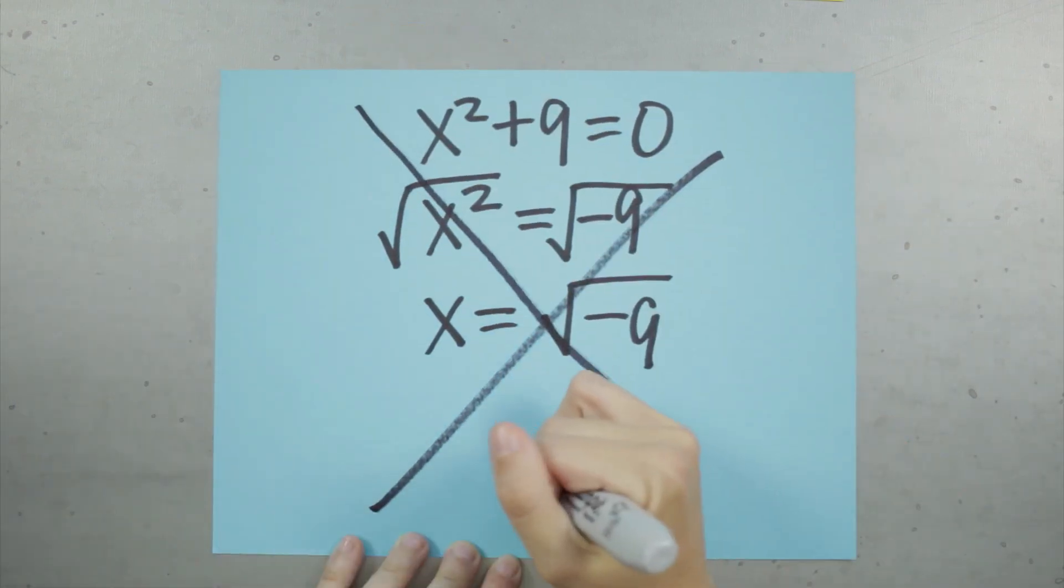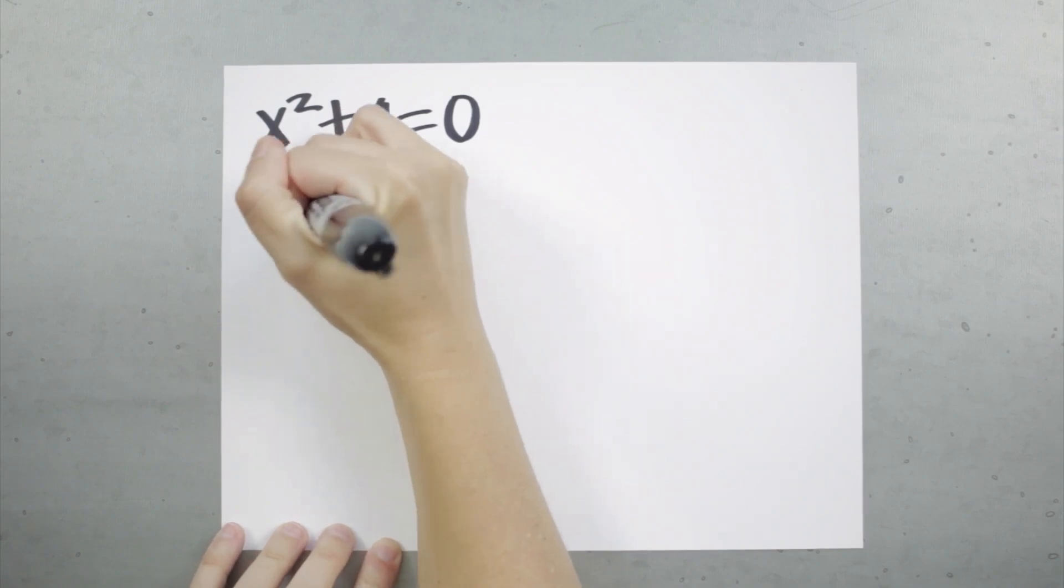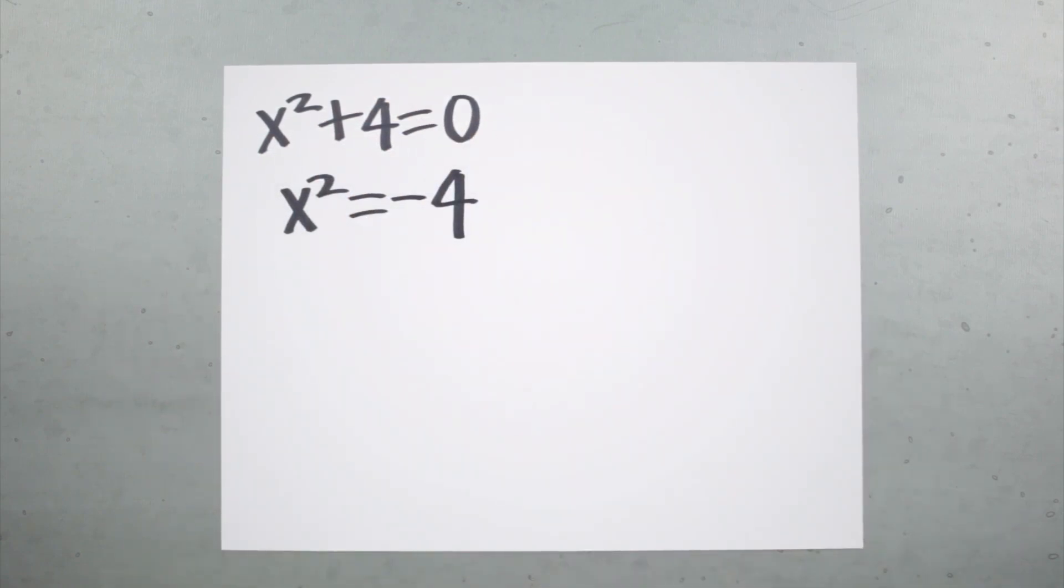And you might be thinking, why do I even need to bother? You probably only have to use i for really hard equations that I'm never going to see. But that's actually not the case. Without i, we can't even solve this super simple polynomial equation. We get to x squared equals negative 4, and we can't go any further.